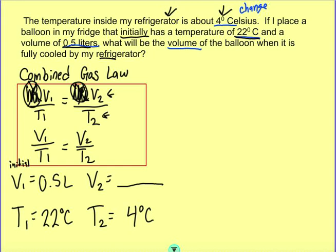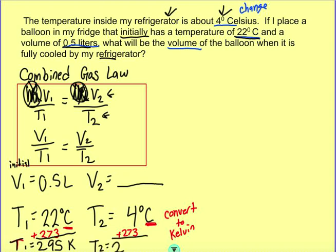But wait. We can never use degrees Celsius when doing combined gas law problems, because sometimes you have negative degrees Celsius. And negative degrees Celsius could give you negative other things, which you can't have. So we always have to convert to Kelvin. And how you convert to Kelvin is you add 273 to the measurement. So T1 becomes 295 Kelvin, and T2 becomes 277 Kelvin. And that's what we can plug into our equation.